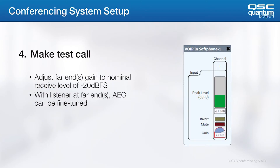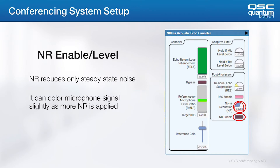Finally, we're ready to make a test call. You'll want to have a trusted person on the other end who can give you qualified feedback about the level and audio quality at the far end. Adjust your caller's far-end audio source to reach the negative 20 dBFS nominal level. With unity gain through the signal chain, you should have the same 70 to 75 dB SPL in the room you measured with the program source. If the far-end caller tells you there's noise, enable the noise reduction.